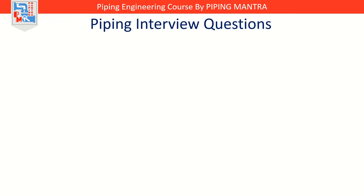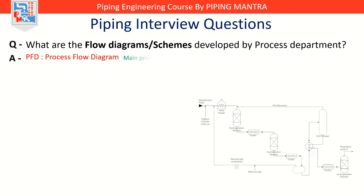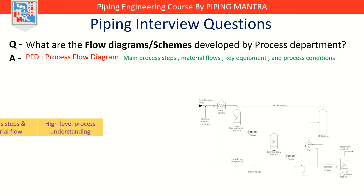So let's get started with the very first question: what are the flow diagrams or schemes developed by the process department? In process engineering, diagrams are our language. They allow us to visualize, communicate and design processes before anything is built. First is PFD, that is Process Flow Diagram. Think of a PFD as the Google Maps of your process. It shows the main process steps, the material flows, the key equipment and the important operating conditions like temperature and pressure. It focuses only on the core production process — how we take raw materials and transform them into final products. We use PFDs during design to make sure the process makes sense, during operation to troubleshoot, and during optimization to improve efficiency.